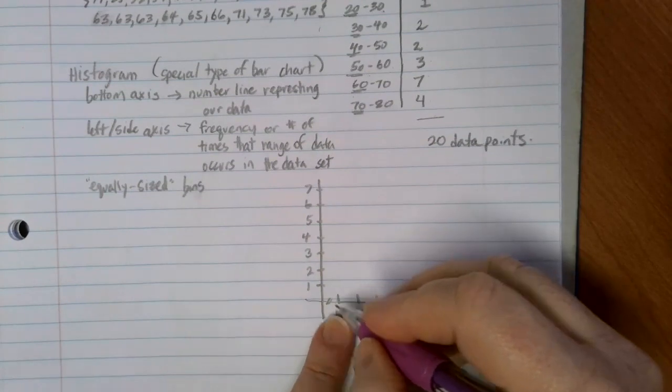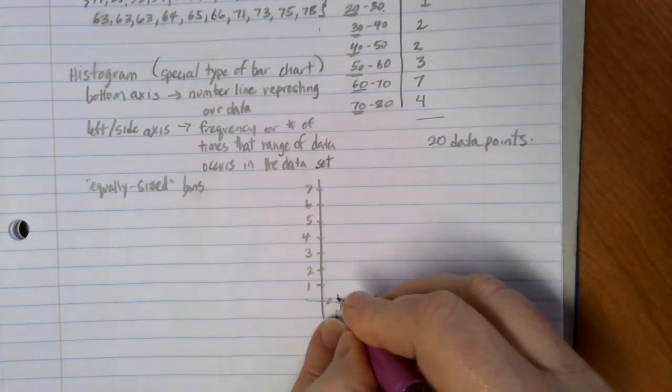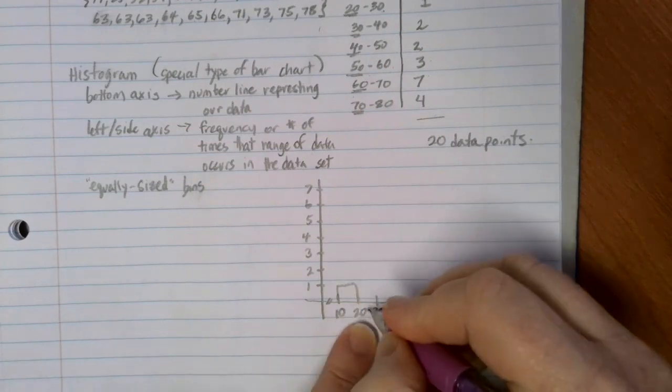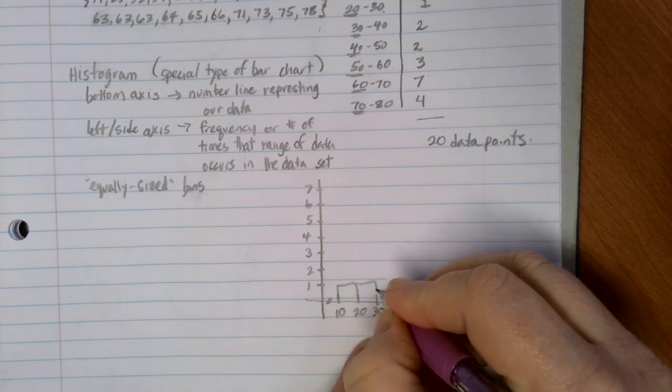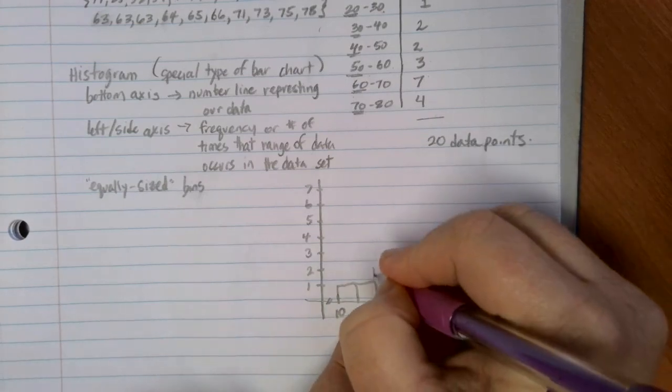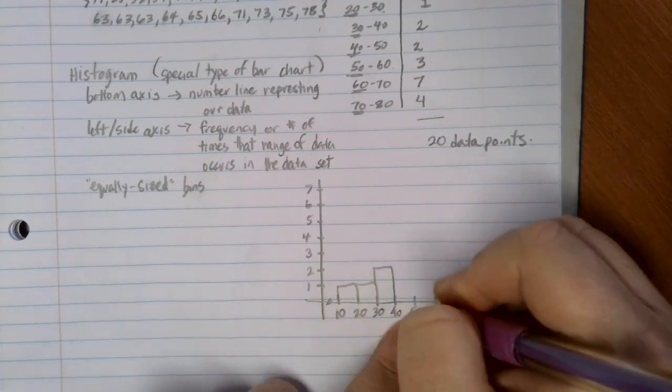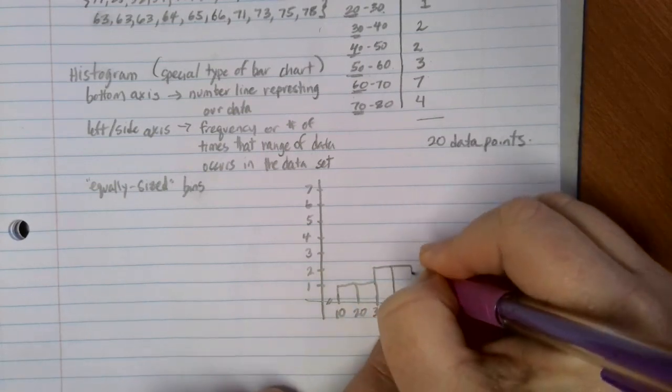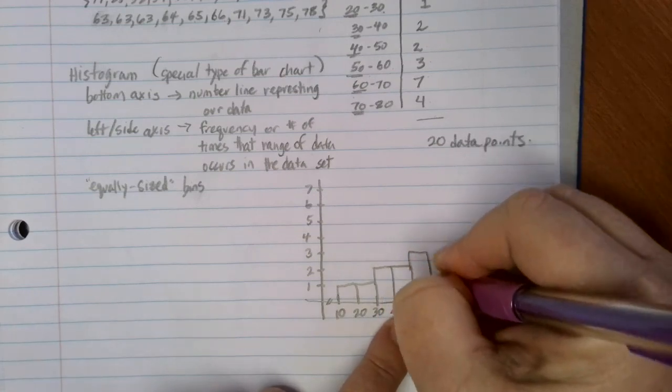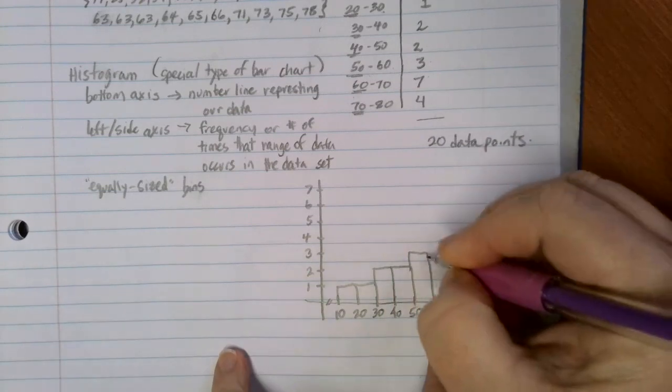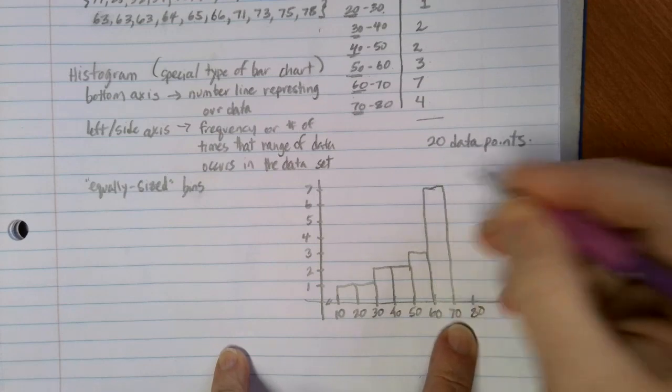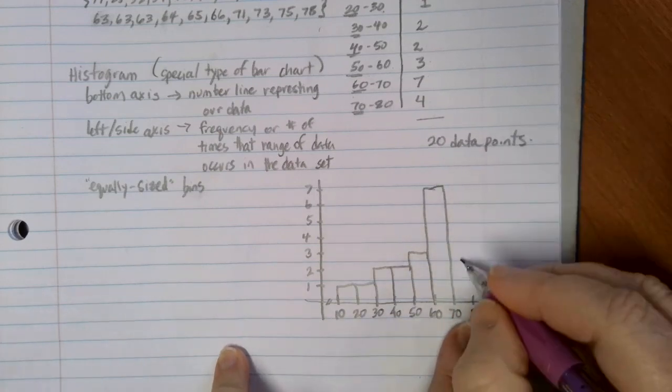And then your bar is just going to go between our category bins here. So between 10 and 20, there was one person. Between 20 and 30, there were one person. Between 30 and 40, there were two people. Between 40 and 50, there were also two people. Between 50 and 60, we went up to three. But between 60 and 70, we had a total of seven people in that category. And then from 70 to 80, we had four.